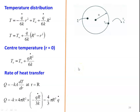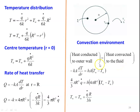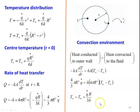For the convection environment, heat generated is conducted to the outer wall and then convected to the surroundings. Setting heat conducted equal to heat convected: (4/3)πR³·Q̇ = H·(4πR²)·(T_W − T∞). Simplifying: T_W = T∞ + Q̇R/(3H). The three important equations are: center temperature T_O = T_W + Q̇R²/(6K), rate of heat transfer Q = (4/3)πR³·Q̇, and wall temperature T_W = T∞ + Q̇R/(3H).